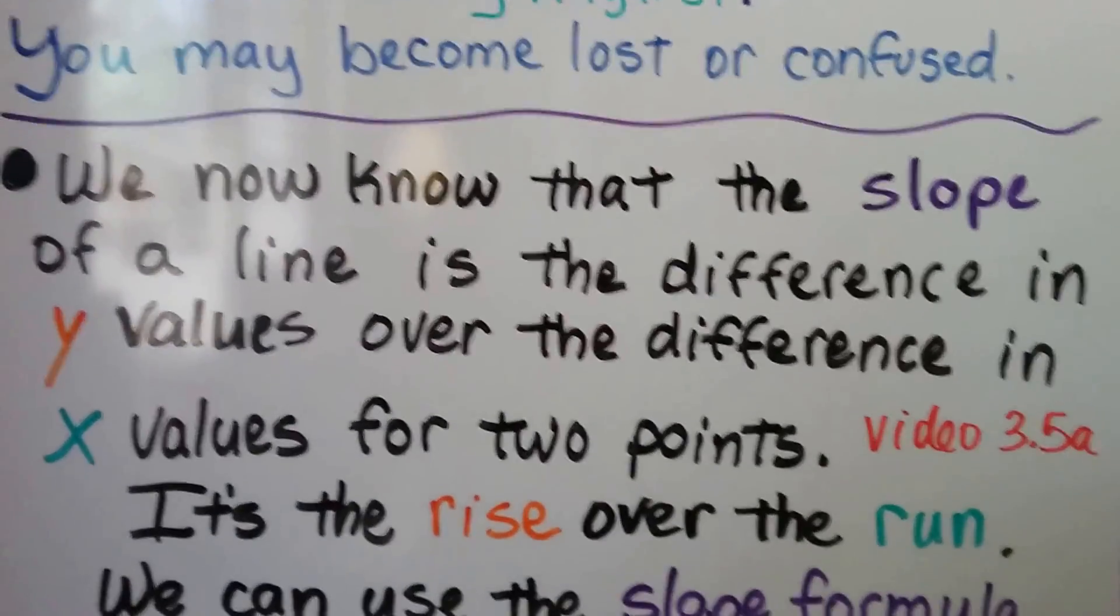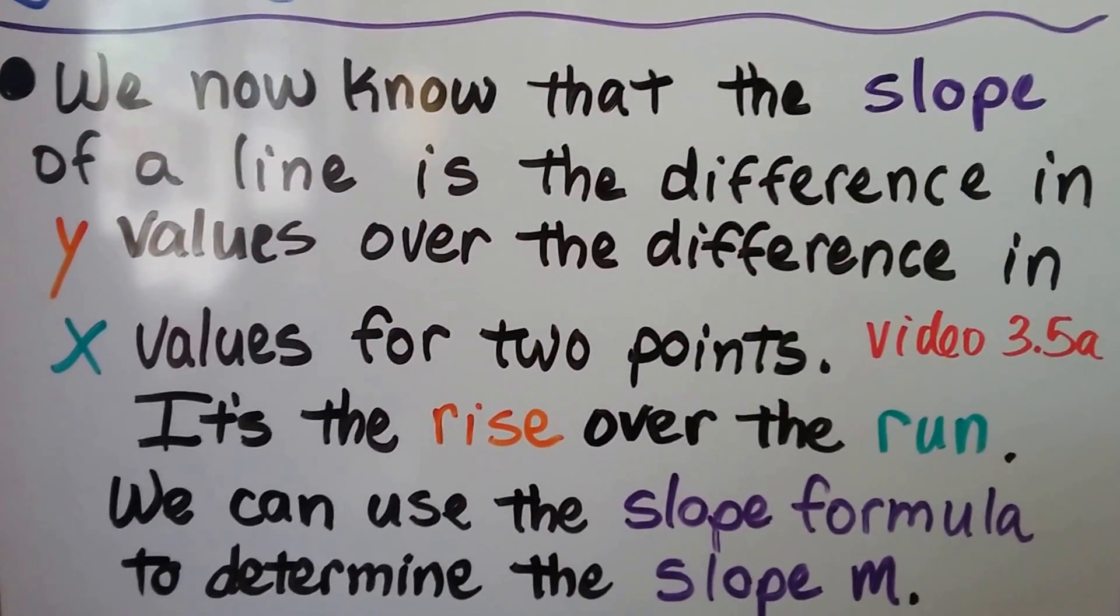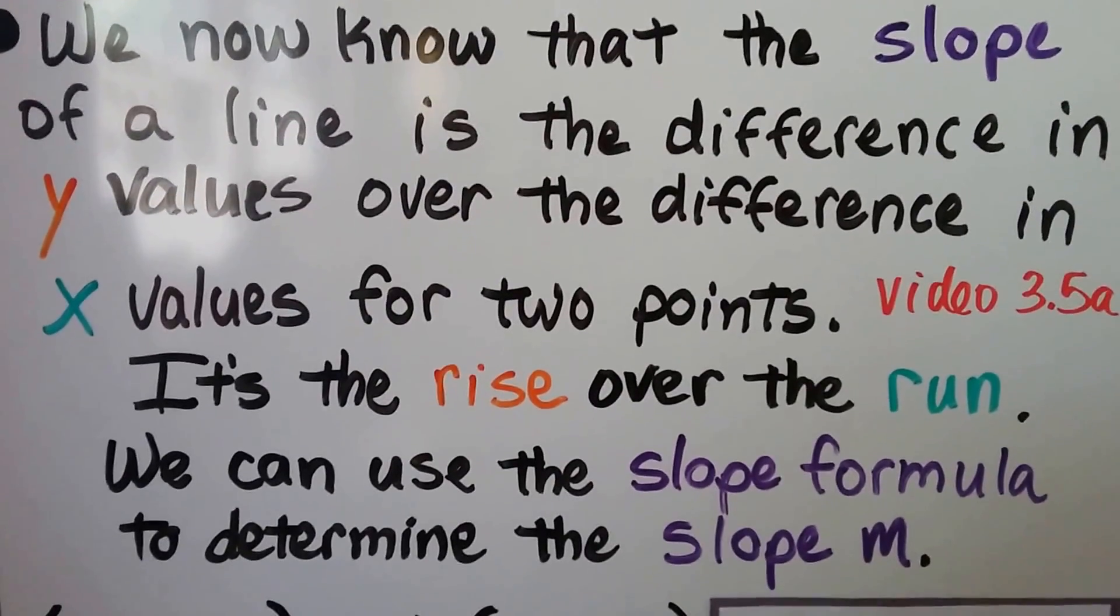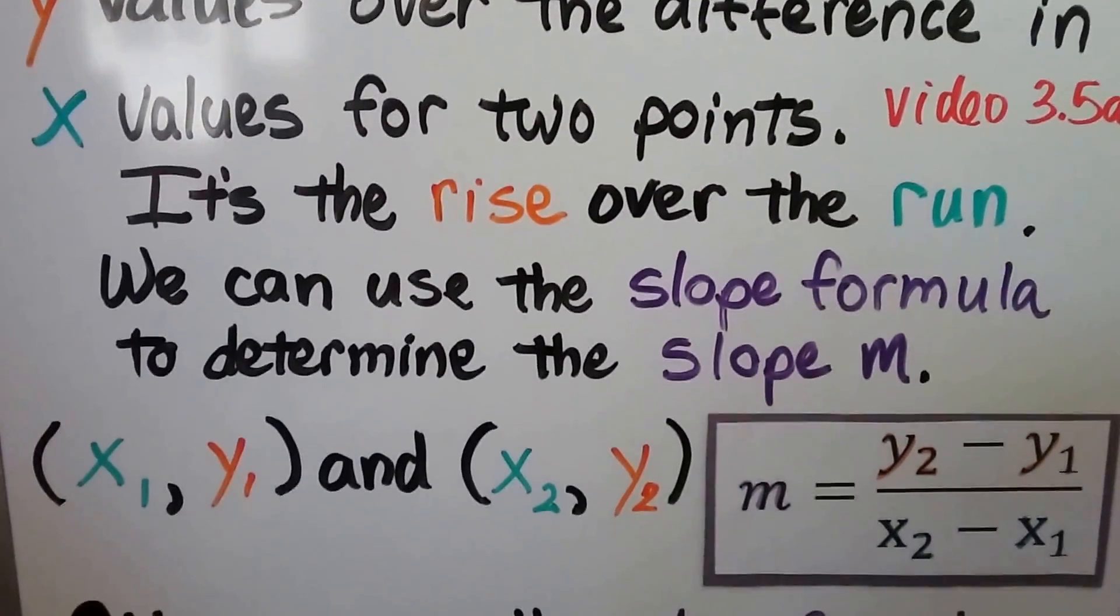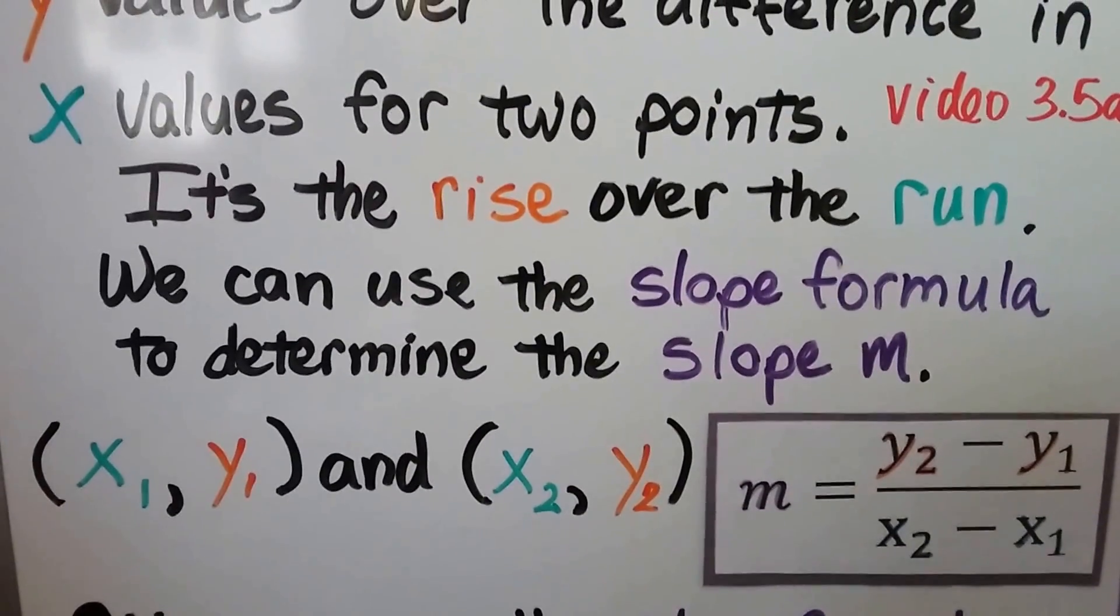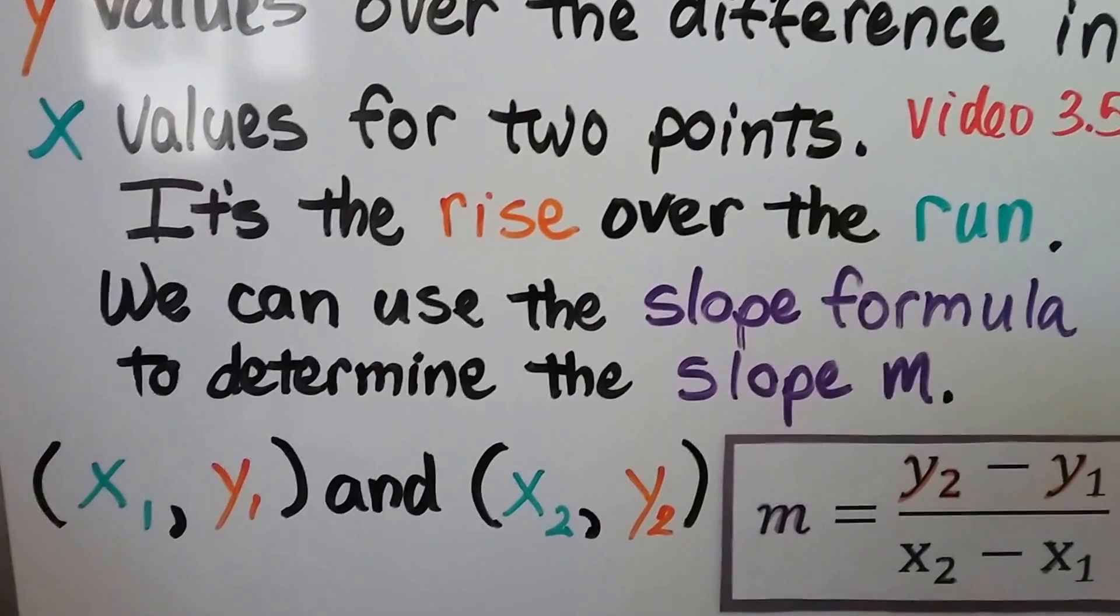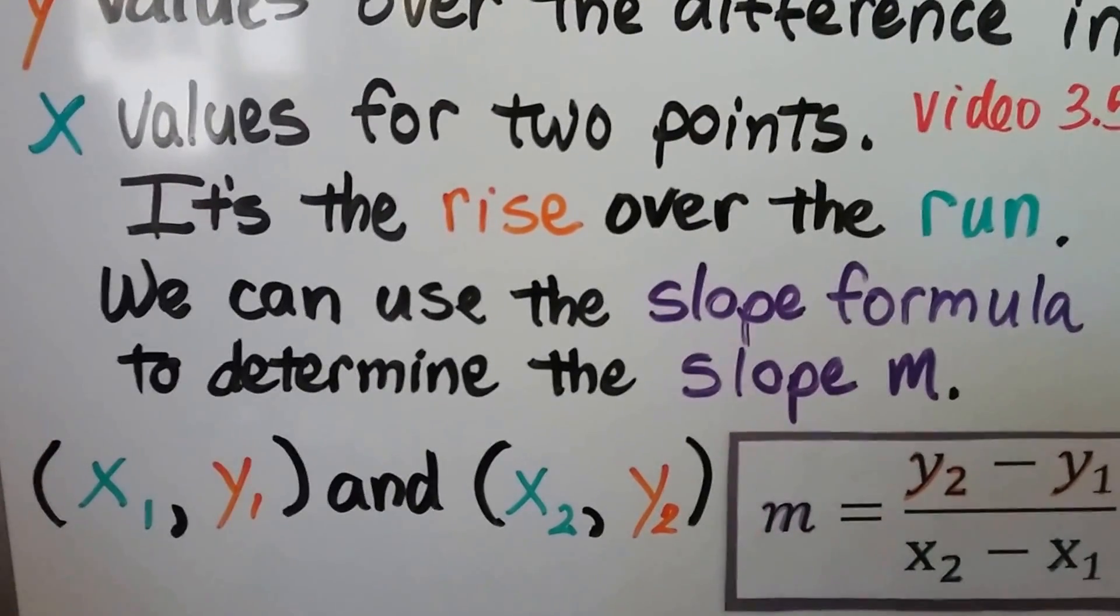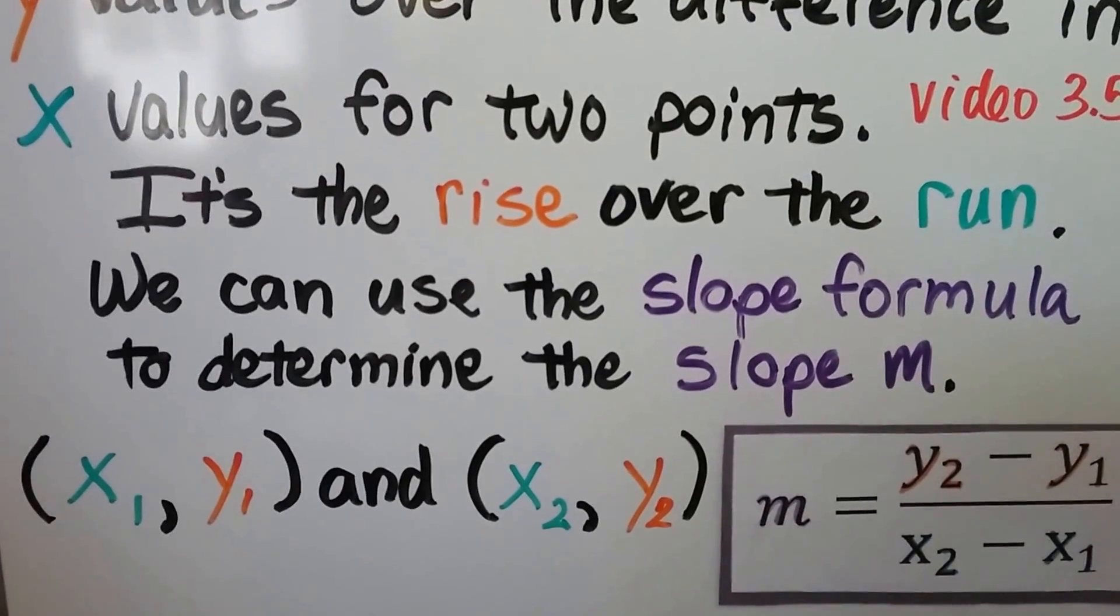We now know that the slope of a line is the difference in y values over the difference in x values for two points. We learned that in the last lesson. It's the rise over the run. We can use the slope formula to determine the slope m. We take two points and their x and y values. So x₁ and y₁ would be the coordinates for the first point, and x₂ and y₂ would be the coordinates for the second point.